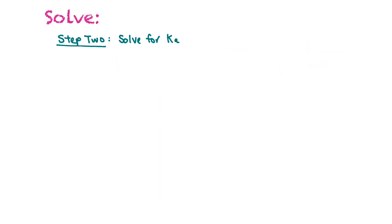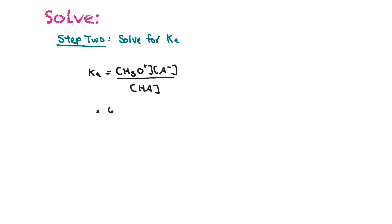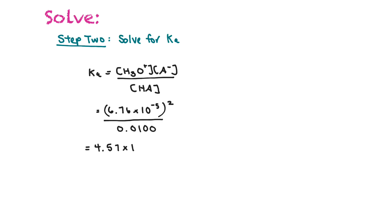The second step is to solve for Ka. Ka equals the concentration of hydronium ion times the concentration of the anion, all over the concentration of the acid. The amount of hydronium ion is equivalent to the amount of the anion, so that gives us (6.76 × 10⁻⁵)² divided by 0.0100, which equals 4.57 times 10 to the negative 7. This is a very small value, confirming that this must be a weak acid.